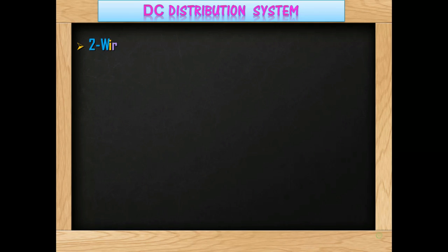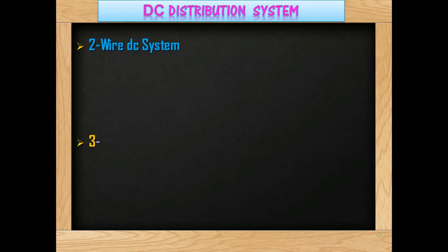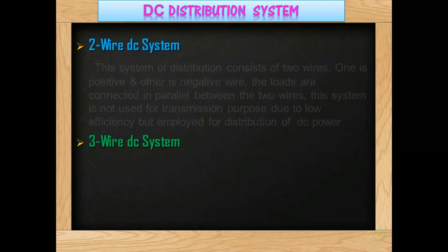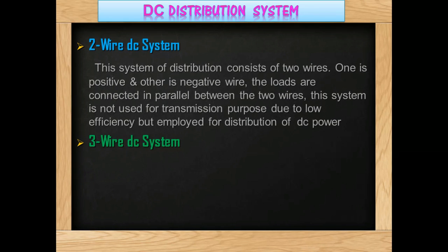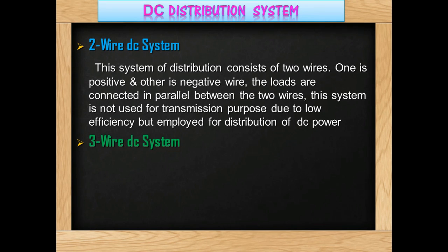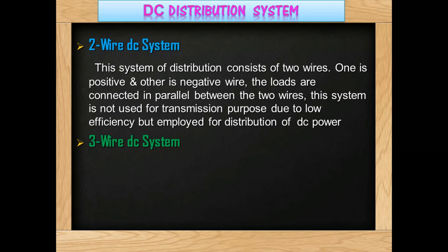DC distribution system has two types: 2-wire DC system and 3-wire DC system. The 2-wire system consists of two wires — one positive and one negative. The loads are connected in parallel between the two wires. This system is not used for transmission due to low efficiency, but is suitable for distribution of DC power.